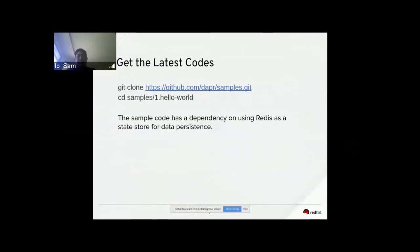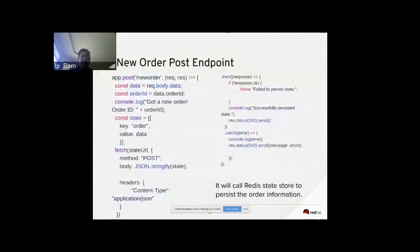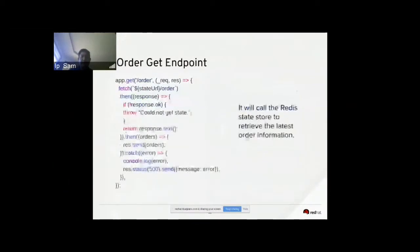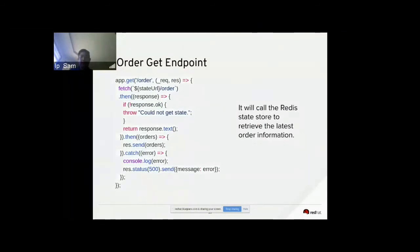Get the latest code from the DAPR samples on GitHub — this is a hello world project. Navigate into the sample hello world folder. The sample code has a dependency on Redis as a state store for data persistence, so you need to install Redis. For the new order POST endpoint, we call app.post with /neworder as the endpoint API. It calls the Redis state store to persist the order information. Similarly, the GET endpoint calls app.get with /order, passing in a request containing the order ID, and retrieves the latest order information from the Redis state store.